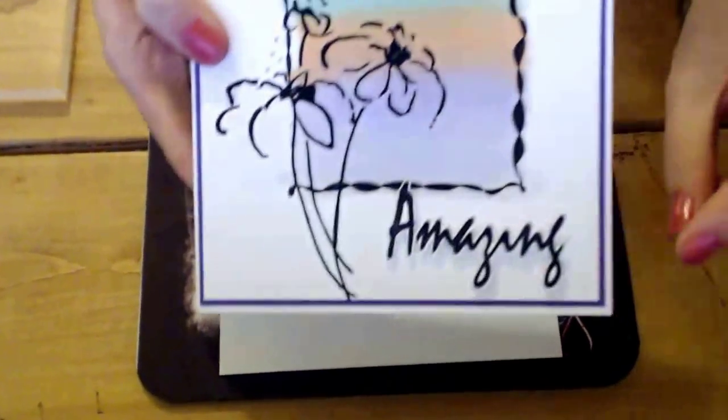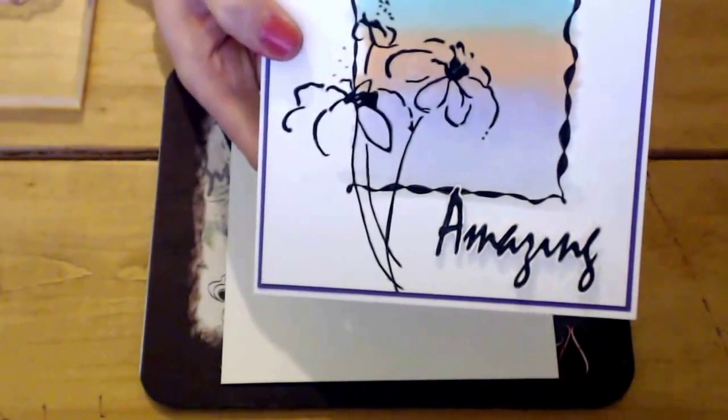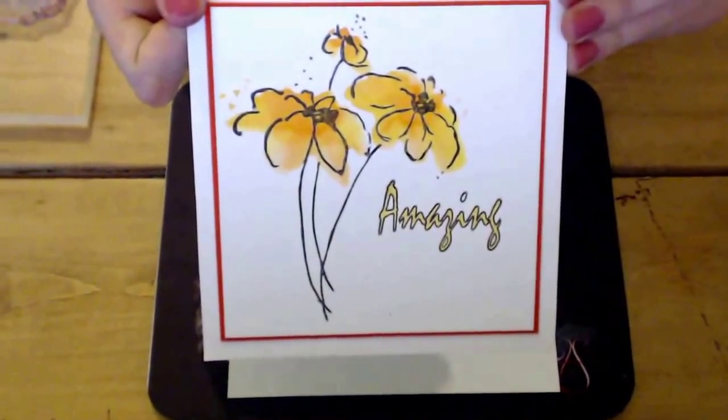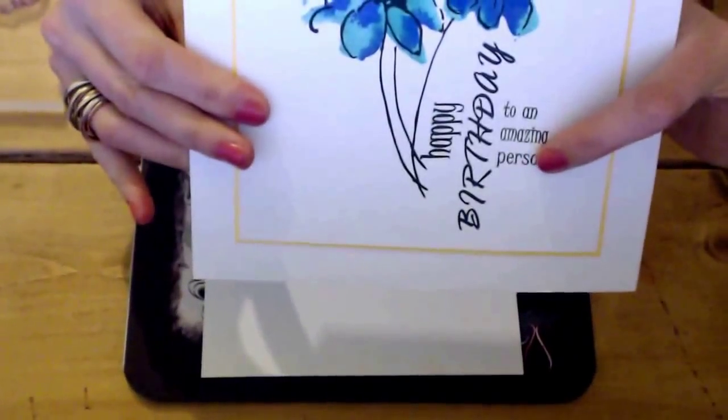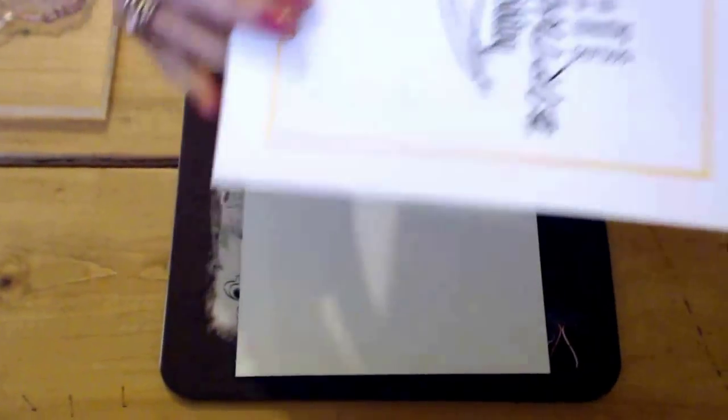In the collection you also get the stamp 'amazing' and you get this in a positive and negative. So that's the positive one where it's all filled in for you, and then this is the negative one. Can you see how I've colored in yellow so it matches my image? So positive and negative. And you also get this extra large sentiment here: 'happy birthday to an amazing person.' This is super huge and I created that because I didn't want it to get lost on an 8x8 card.